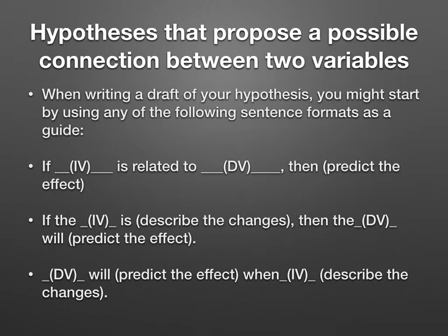Another way of saying it: 'If drug one speeds up planaria regeneration, and if drug one is increased, then planaria regeneration will increase. If drug one is decreased, then planaria regeneration will decrease.' A third scenario uses the format 'DV will predict the effect when IV' — for example: 'Planaria regeneration will increase when drug one is increased.'